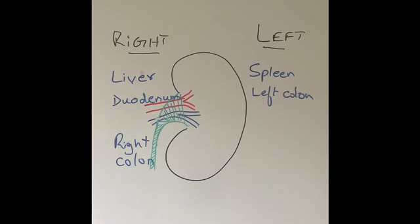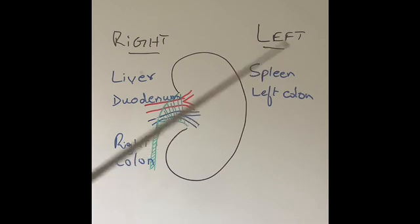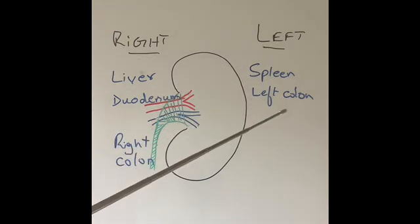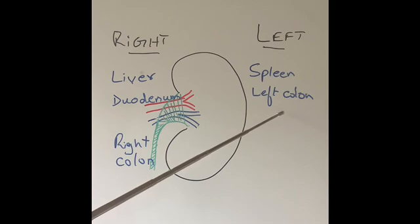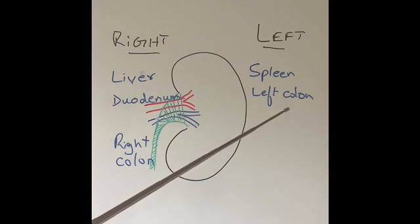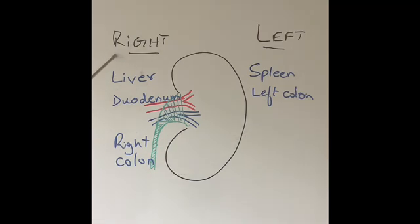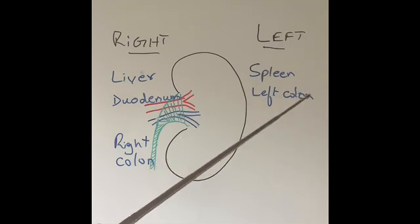Next, let's briefly discuss which other organs in our tummy lie very close to the kidneys. The left kidney is on the left side of our tummy. The two main organs lying very close to the left kidney are our spleen and the left side of our colon. Other structures like the tail of the pancreas and also the stomach lie very close to the kidney on our left side.